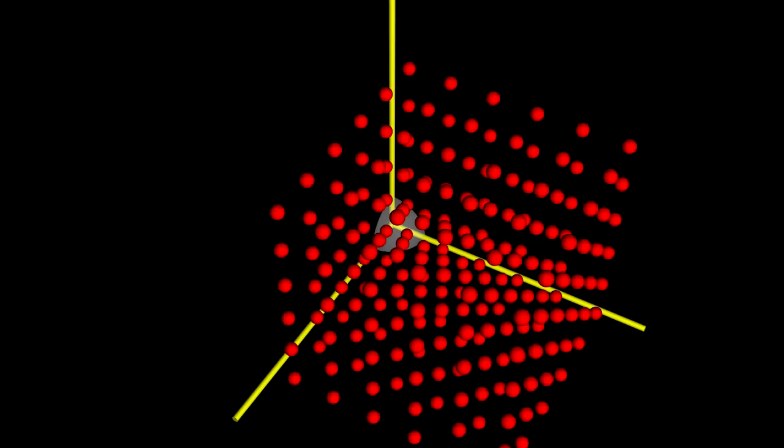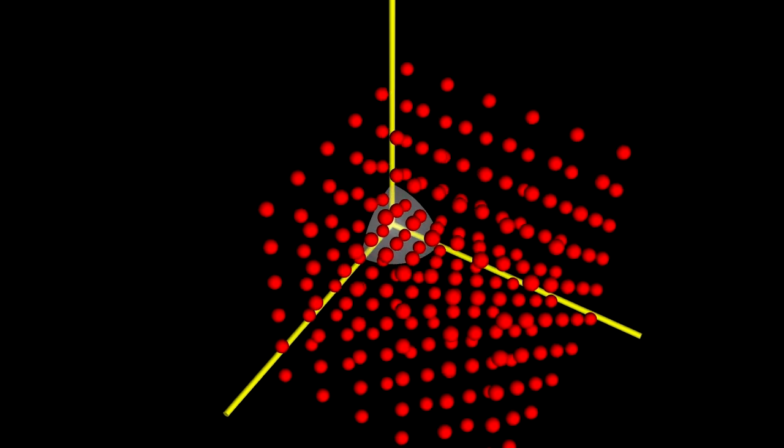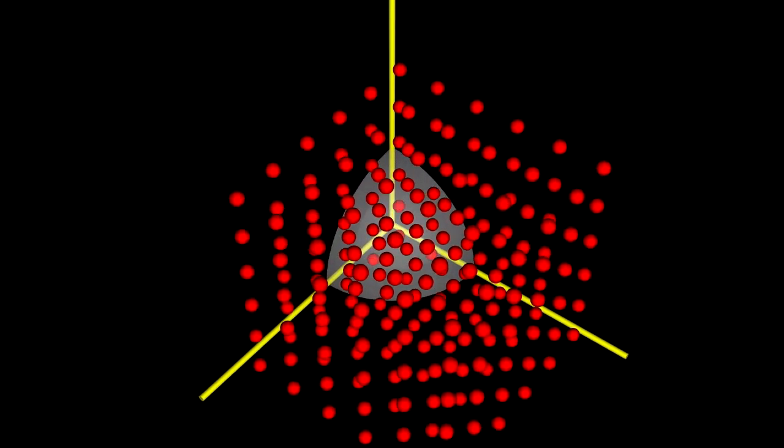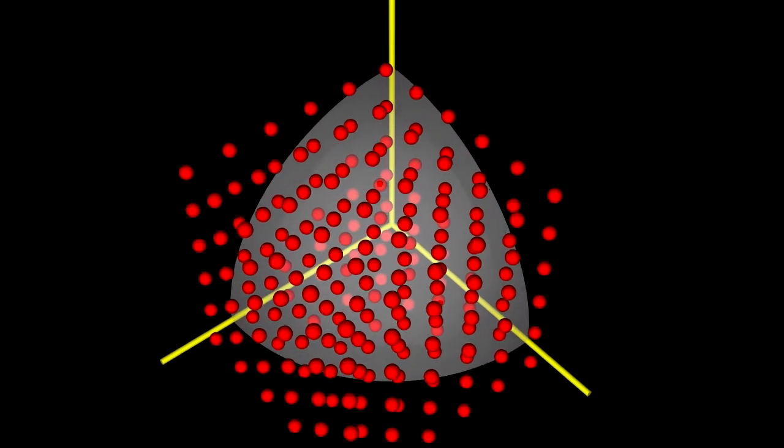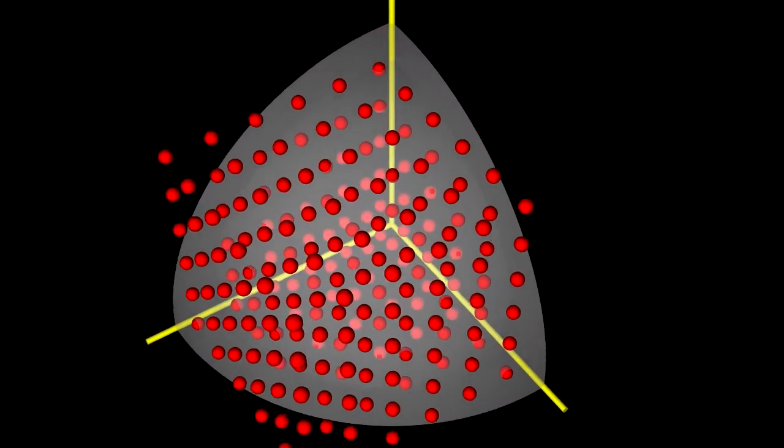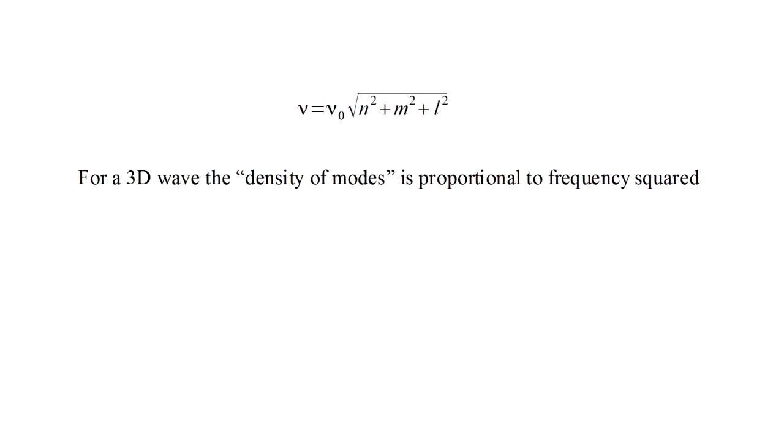So our modes are now indexed by three numbers, n, m, and l. Each mode is a point in a three-dimensional grid, and a given frequency represents a spherical surface. The density of modes now corresponds to the number of grid points between two spheres. This is proportional to the square of frequency, and we write rho of nu equals A times nu-squared.